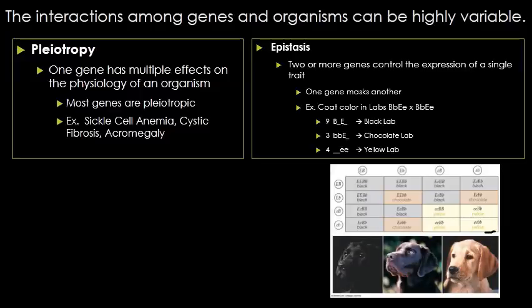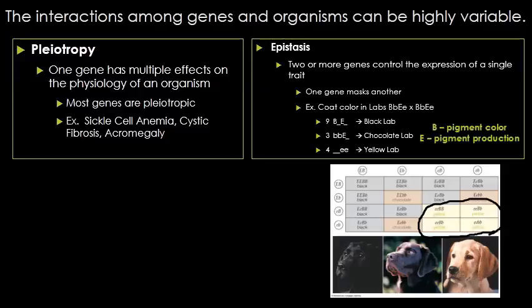Epistasis occurs when two or more genes control a single trait and one gene prevents the expression of another. The example here is Labrador retrievers. Regardless of what the B allele is, if the Labrador retriever has two recessive E alleles, then they will be yellow labs. The B alleles control the color of the pigment, but the E allele controls the amount of pigment produced. So it doesn't matter what color the lab would have been — if they don't produce pigment, they will be a yellow lab.